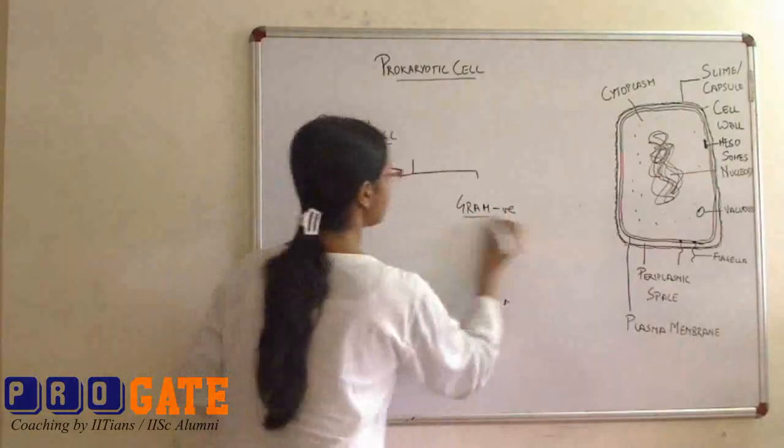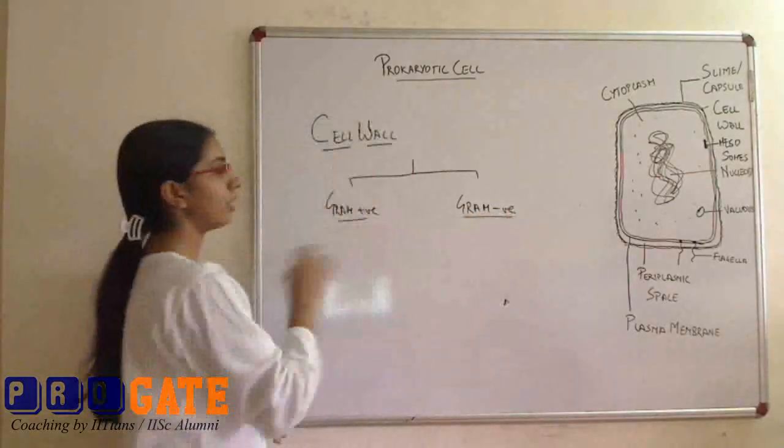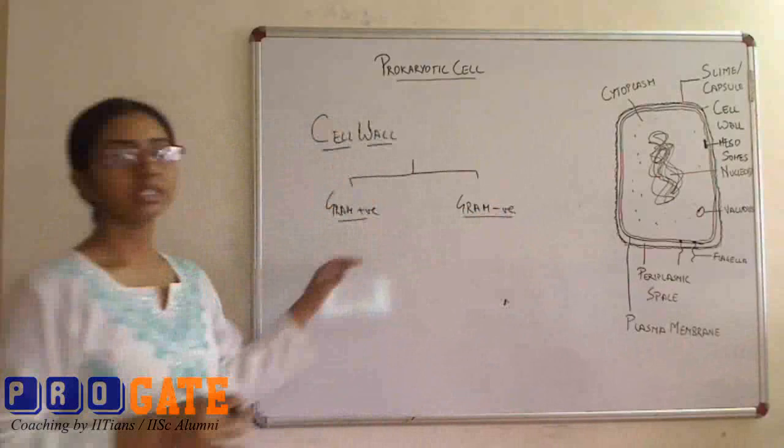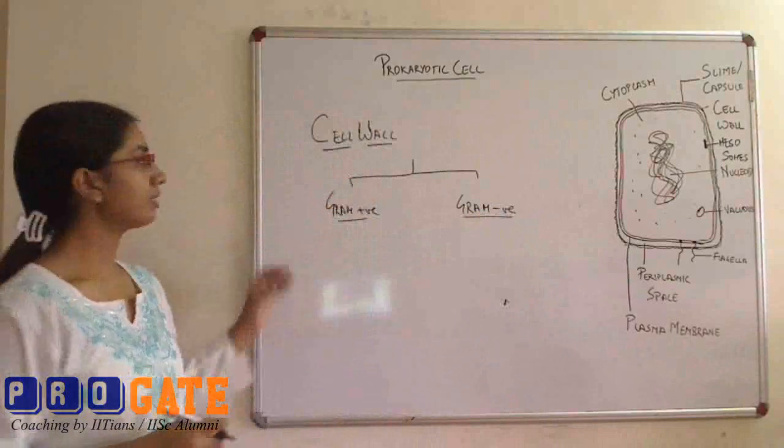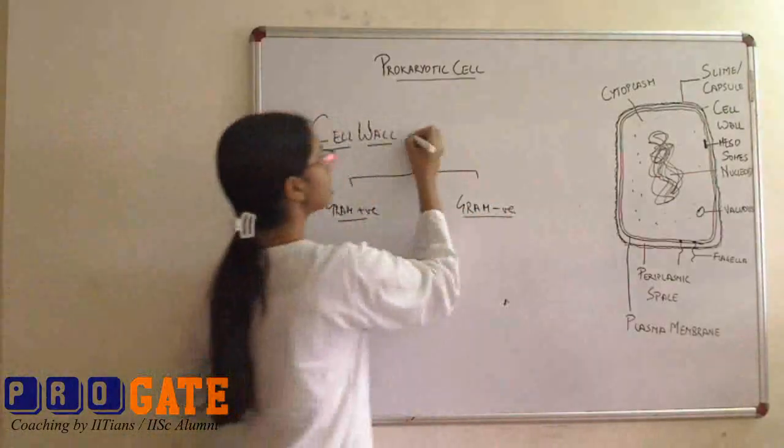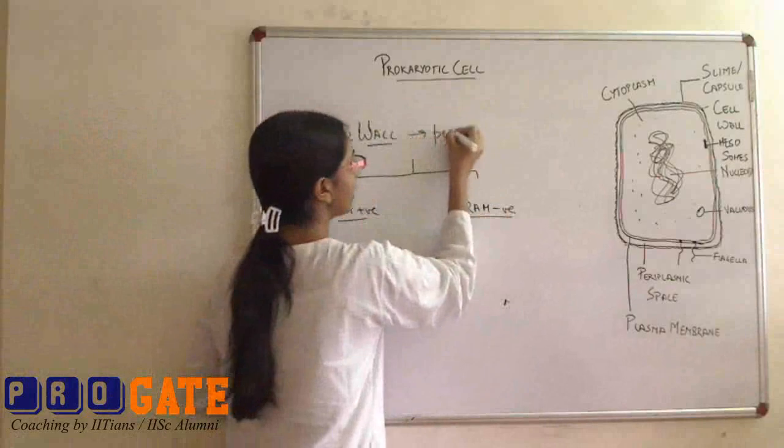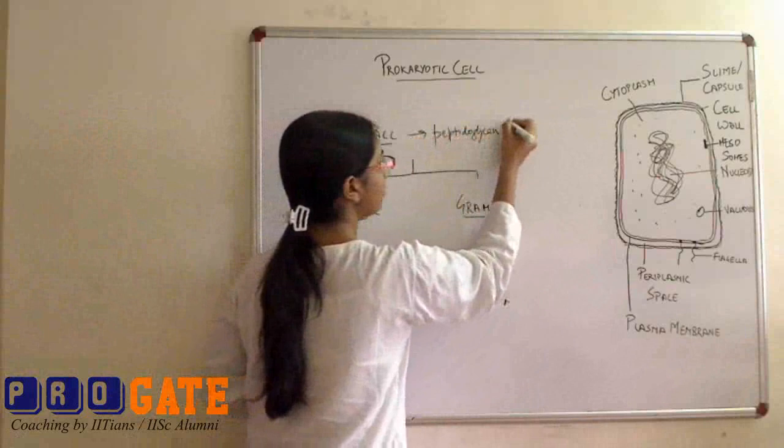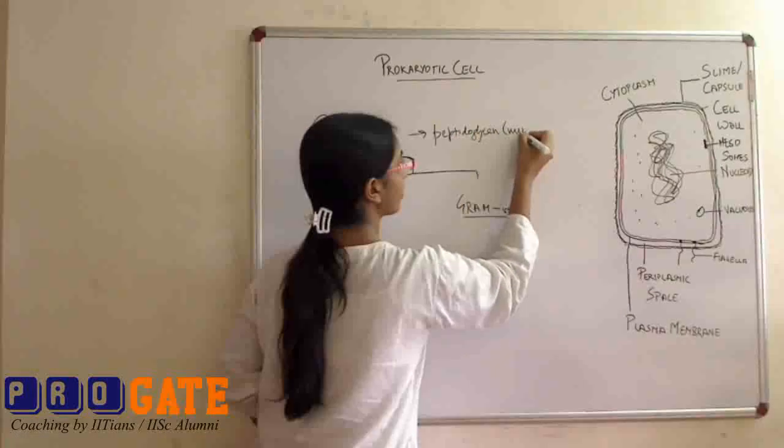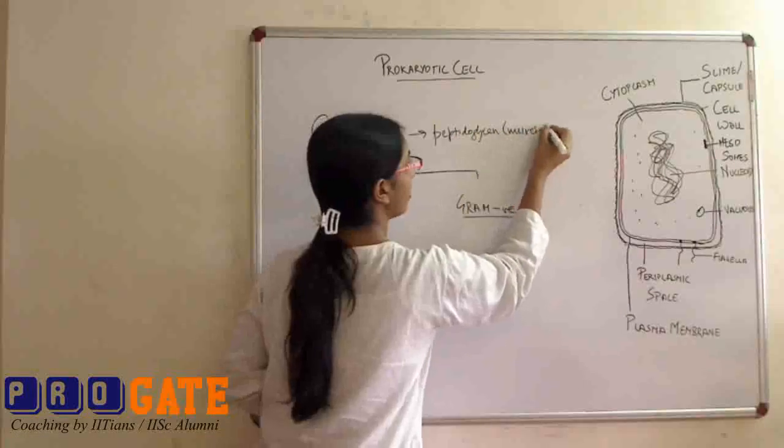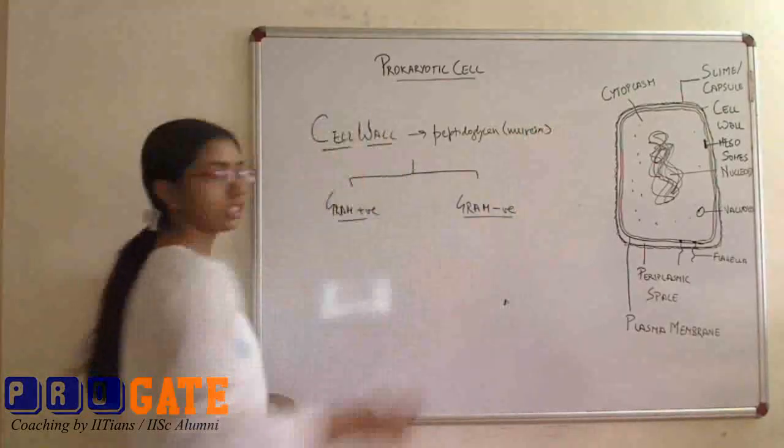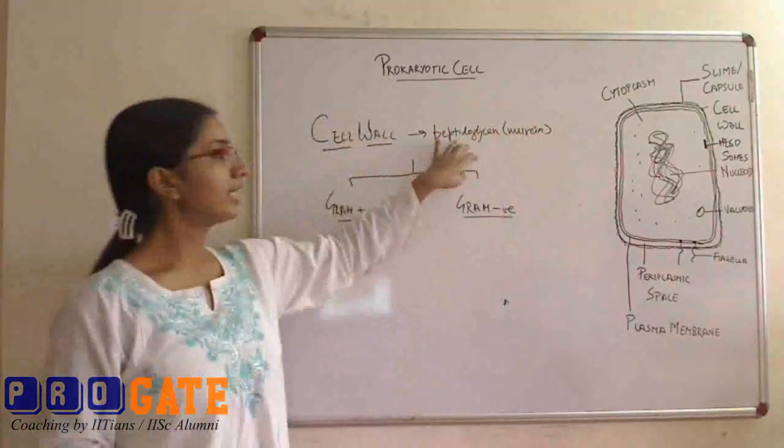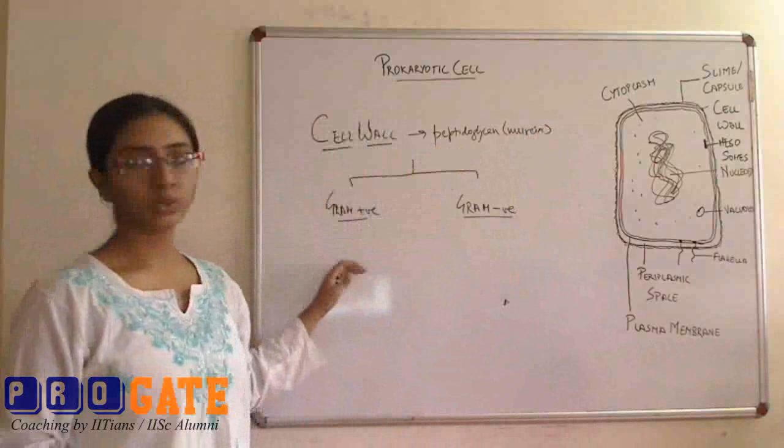So what is the difference? Apart from the differences, there are certain common moieties that are present. The cell wall basically consists of the peptidoglycan units or murein, which provides the shape. So this peptidoglycan actually differs in these two kinds of bacteria.